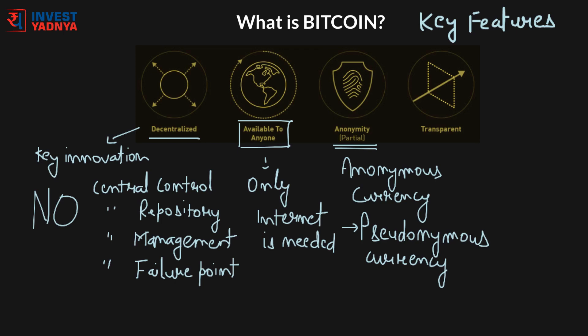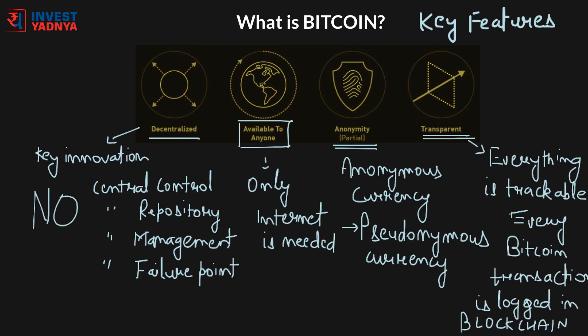The next feature is transparency. Everything that happens in the Bitcoin world is trackable. Thanks to the way the algorithm is structured, every Bitcoin-based transaction is locked in the blockchain, leading to a level of transparency that may surprise some users. For example, if you publish your Bitcoin address on your website, everyone in the world will be able to know your Bitcoin balance, where you have spent your bitcoins, and from where you received them.